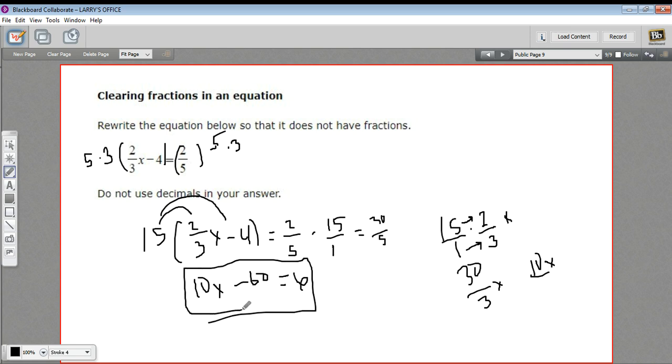And if you wanted to go on and solve that equation, you would add 60 to both sides. You'd get 10x equals 66. And x is going to be 66 divided by 10, or 6.6, or 33 fifths.